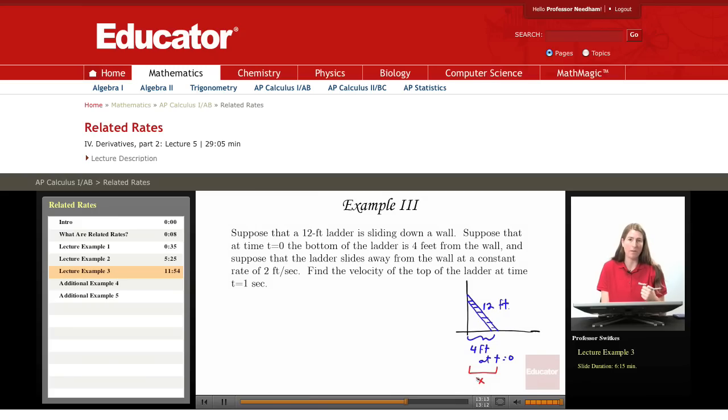So I'm going to call that quantity x. X is going to represent how far the base of the ladder is from the wall. And I'm going to let y equal how far up the wall the top of the ladder is. Now notice that similarly to the previous example, we have a right triangle. The ladder here is forming a right triangle with the floor and the wall. And so by the Pythagorean theorem, x squared plus y squared equals 144. And I'll put a note here that we're using the Pythagorean theorem.